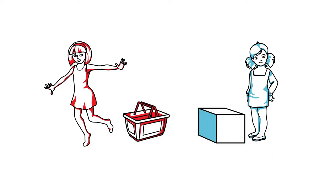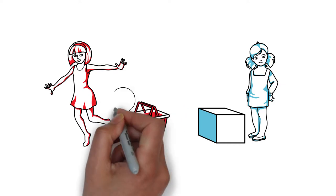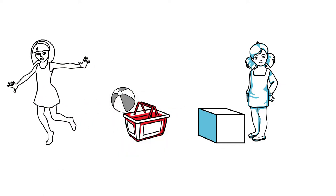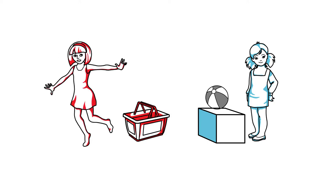Sally places a ball in her basket and then leaves the room to go for a walk. While she's gone, Anne takes the ball and puts it in her own box. After a while, Sally returns.